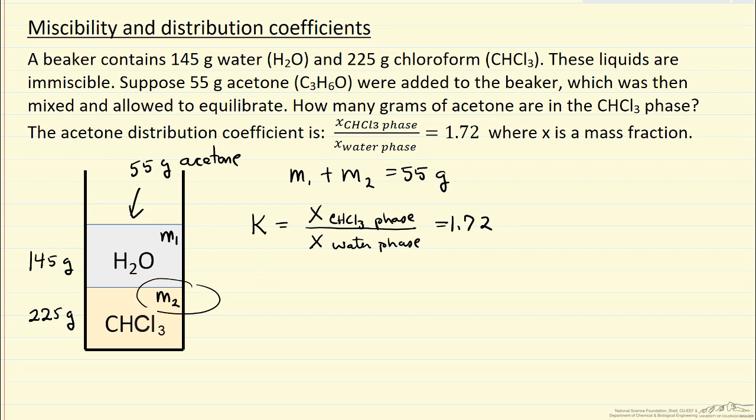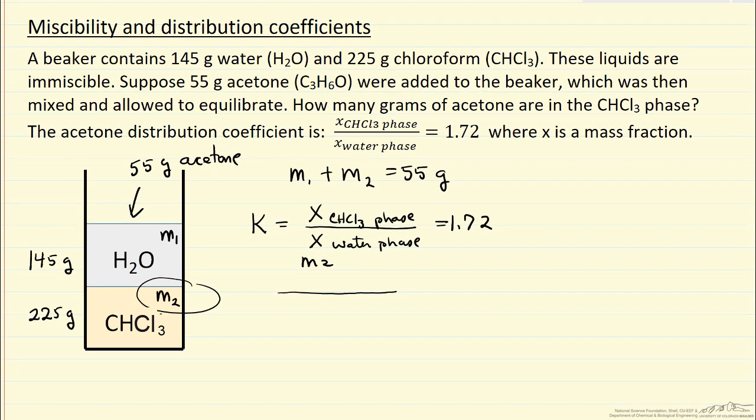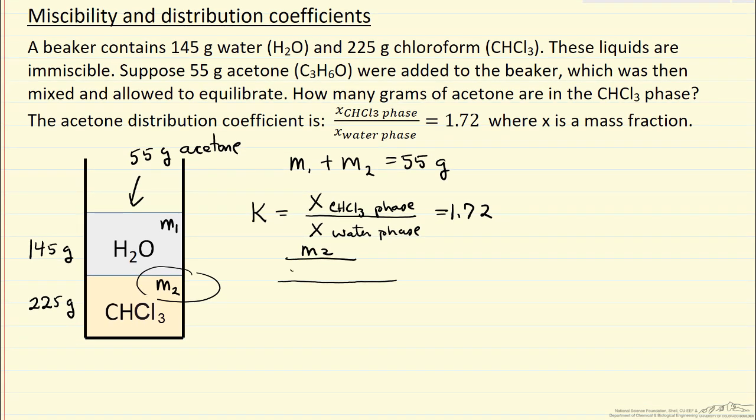So let's write the numerator, I'm going to write the mass fraction of acetone. That'd be number of grams of acetone in this phase over total number of grams. Number of grams of acetone in the water phase over the total number of grams of water. Those are the two mass fractions, and that ratio has to equal 1.72.